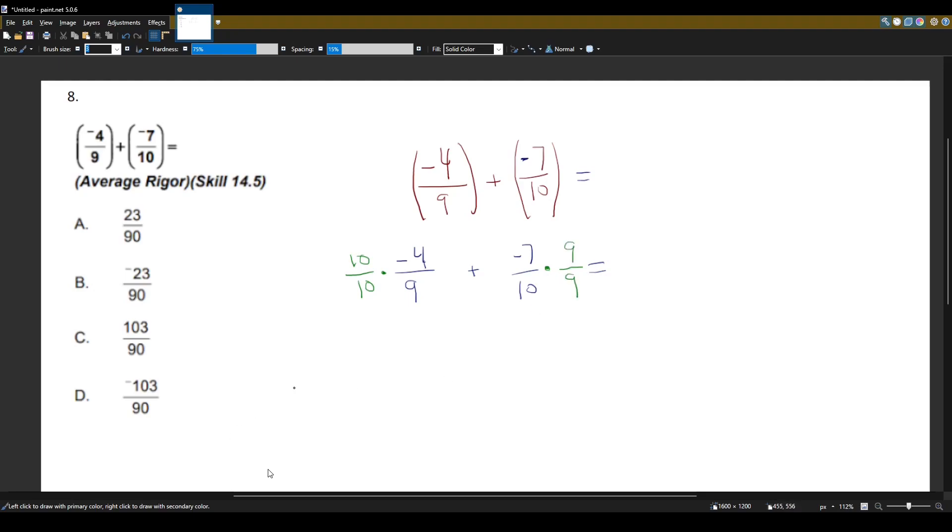And now let's see what we get when we multiply these numbers together. So negative 4 times 10 is negative 40, 9 times 10 is 90. Plus negative 7 times 9 is negative 63, and 10 times 9 is 90.